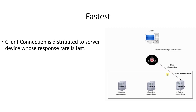The next is the fastest method. In this load balancing method, client connections are distributed to the server device whose response rate is fastest. Node one has 20 active connections, node two has 15 active connections, whereas node three has five active connections. Since node three has the fewest active connections, its response rate will be higher compared to node one and node two. So the client request coming to the F5 load balancer will be sent to node three. This method considers server device performance and supports node or pool member assignment.